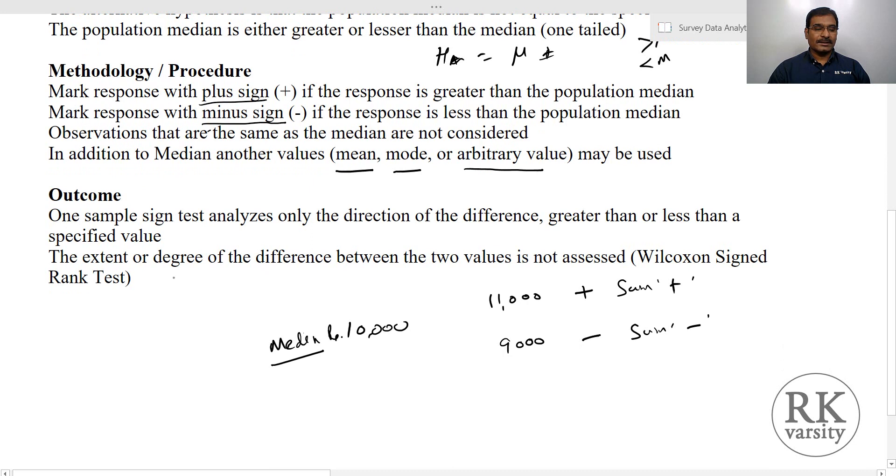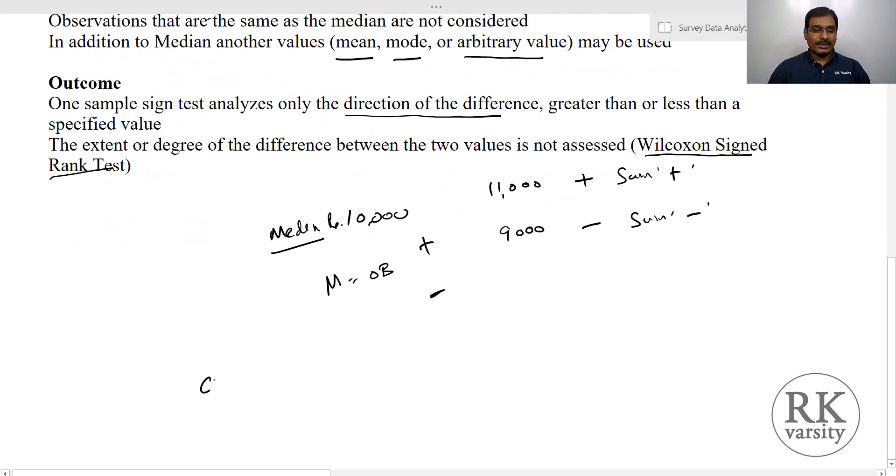Now the outcome is that one sample sign test analyzes only the direction of the difference. It will say whether the direction is median equals to your observed values or not. Or it will tell that the direction is in the positive side or the direction is in the negative side. It will not explain the intensity or size of this direction or the degree of extent of this direction. To know the degree of extension, then you need to use the Wilcoxon signed rank test. Normally these two tests, one sample sign test is used along with Wilcoxon signed rank test.